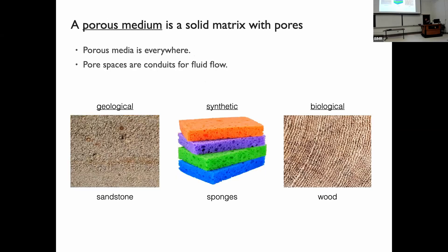A porous medium is a solid matrix with pores. Porous media are prevalent on our planet, ranging from geological porous media like sandstone, to synthetic ones like a sponge, to biological ones like wood. One common aspect of all these materials is that they contain pore spaces that allow fluid flow — and that is what we study.